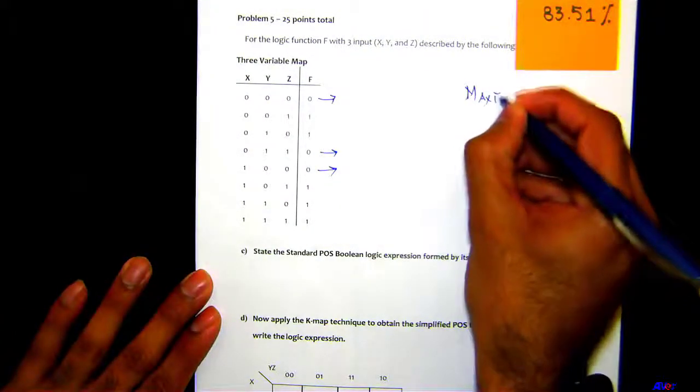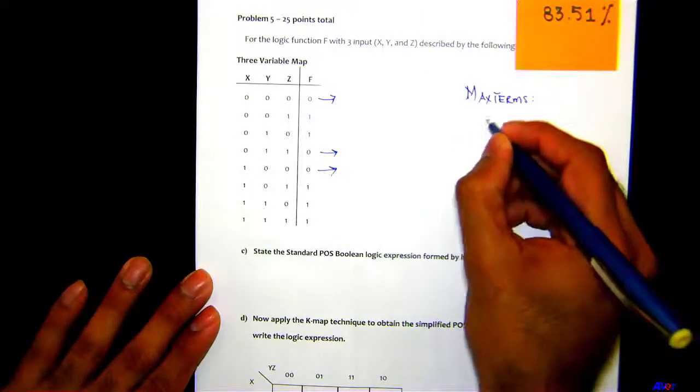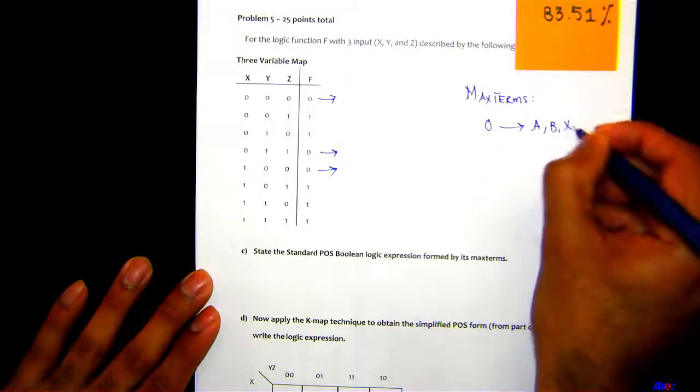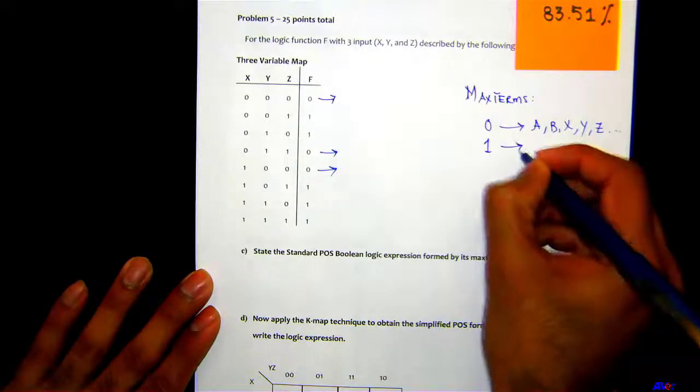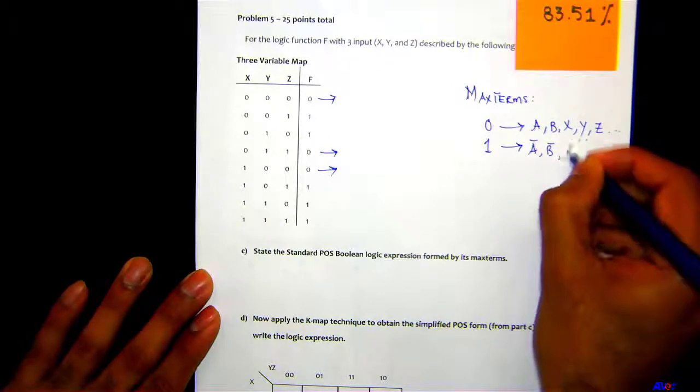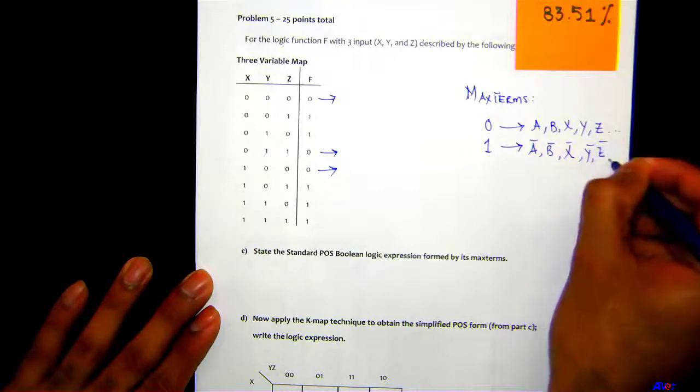The max terms expression works such that zero could be A, B, or whatever—X, Y, Z—whatever the name of the variable is, and one is going to be A̅, B̅, X̅, Y̅, Z̅, and so on.